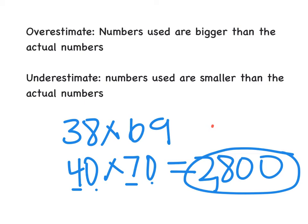Now I'm going to go back and see if I have an overestimate or an underestimate. From 38 to 40, I went up. So I used a number that's bigger than my actual number, 38. And 69 to 70, I went up. So again, I used a number that's bigger than the actual number, 69. So this would be an overestimate.